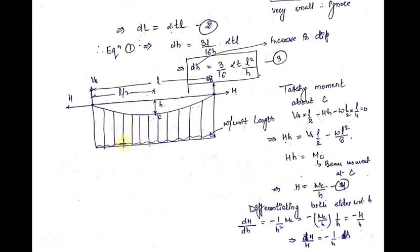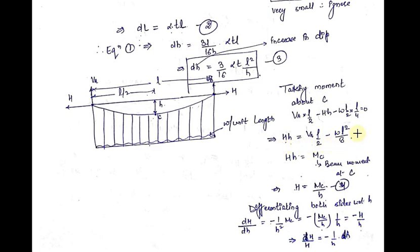The third force is the UDL acting downward, which produces an anticlockwise moment about C, so minus. Converting the UDL into a point load by multiplying by its length — on the left of C the length is L/2 — gives minus W into L/2. This point load acts at the center of L/2, which is L/4. Setting the sum equal to zero and solving gives H·h equal to VA·(L/2) minus WL²/8.